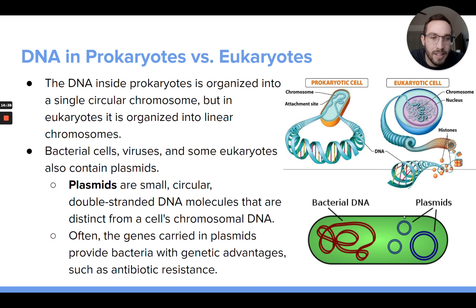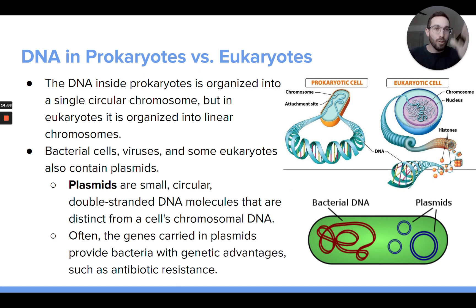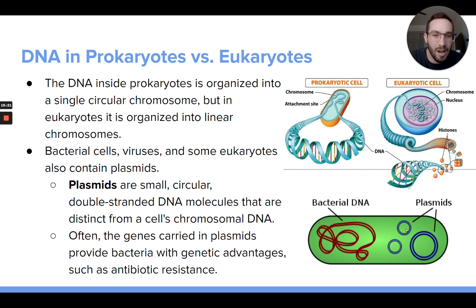One more thing coming up in this unit: there are structures called plasmids that certain cells have, usually bacteria cells, though sometimes viruses and some eukaryotic cells have them too. Plasmids are small pieces of circular DNA that have some extra genes on them — they're not technically chromosomes. They're tiny circular loops of DNA that exist separate from the chromosome and contain some extra genes. Plasmids are very small compared to an actual chromosome.